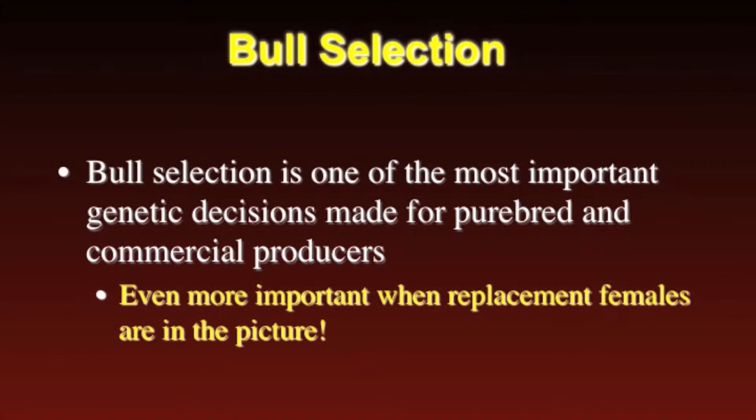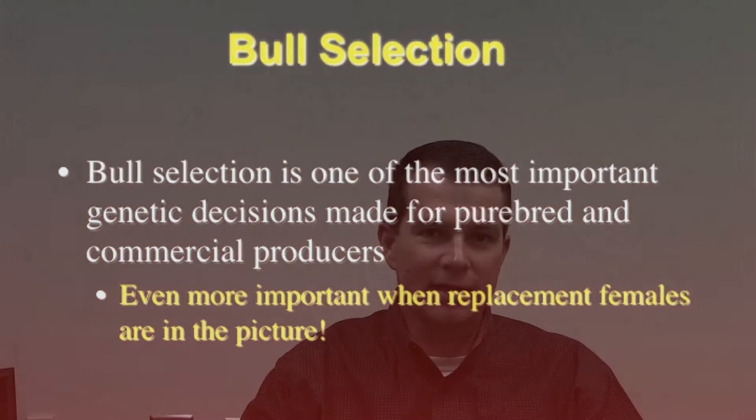Females contribute 50% and the bull has about half the impact that the female does, but a bull in a commercial operation doing natural service could be mating 25 to 30 cows. In an artificial insemination scenario, he could be mating thousands of cows per year. So the bull makes a really big impact on the operation and can have either a good or bad influence overall.